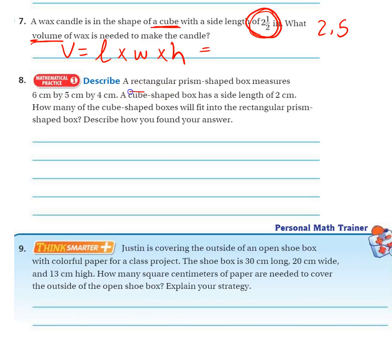Number 8, a rectangular prism-shaped box measures 6 by 5 by 4. A cube-shaped box, so all the sides are the same, each side is 2.